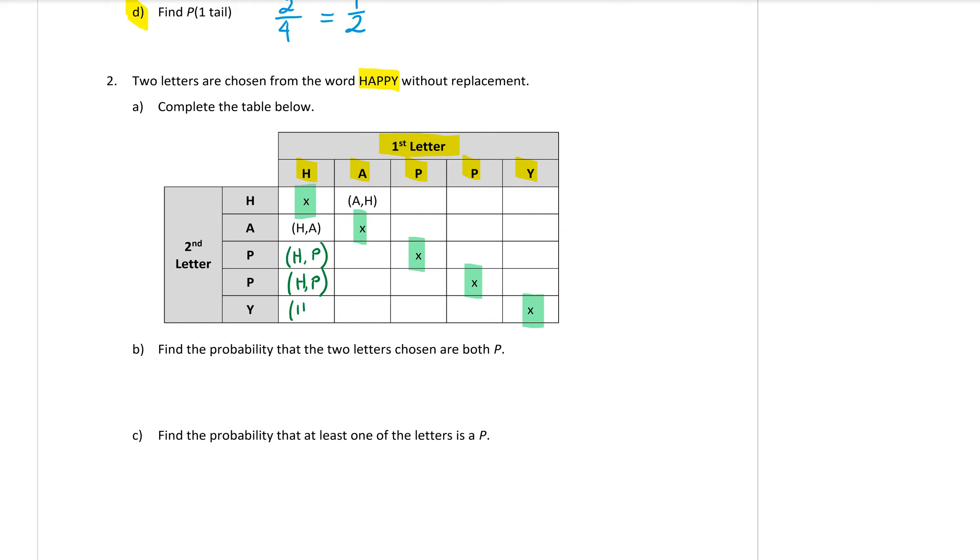H and a Y. Okay, then in the second column we've already got the first one filled in, A and H. We can't have A and A, but we can have A and P, and A and P, and A and Y.